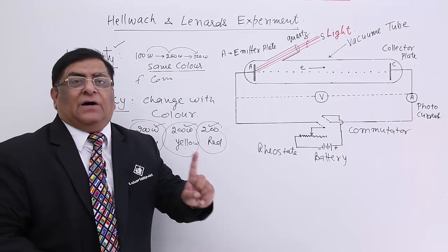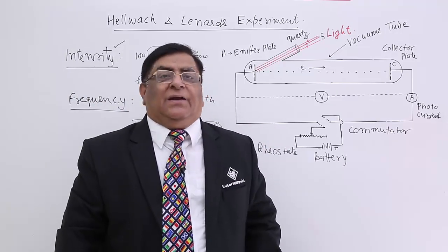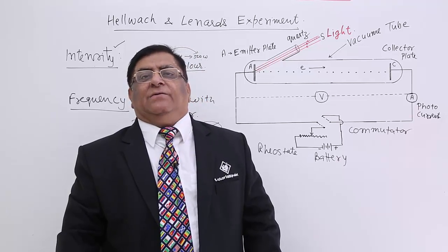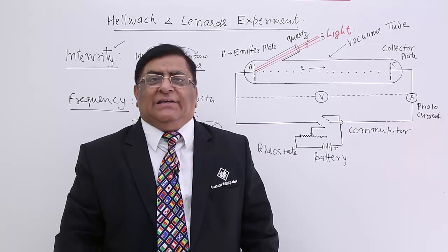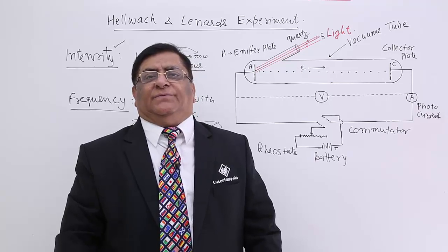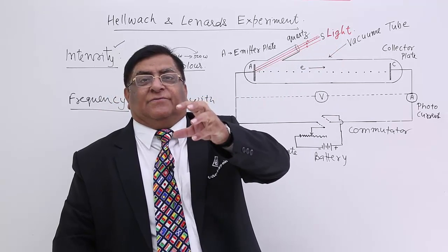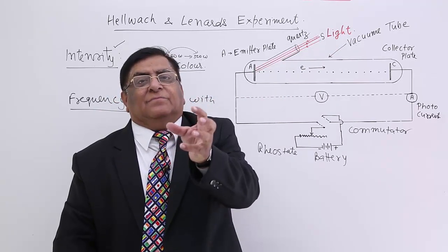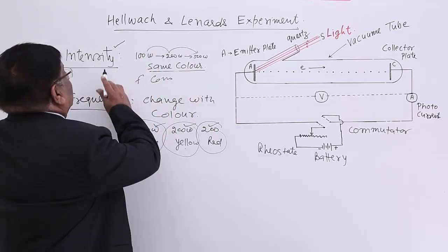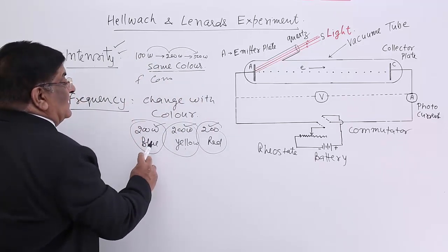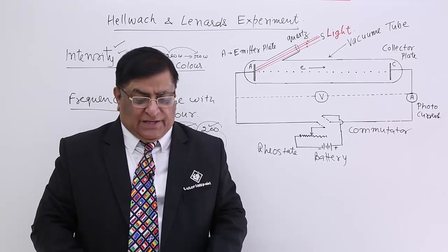This is the method — how we use the terms 'changing frequency' and 'changing intensity.' Practically, we need not change the bulbs. Nowadays we have dimmers — regulators like a fan regulator — and using that, it will dim or increase the light of the same bulb, which is changing the intensity. But for changing frequency, you will have to change the colors. So these are the two methods you have understood.